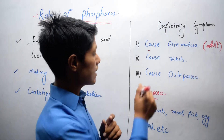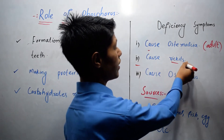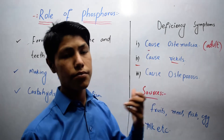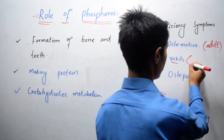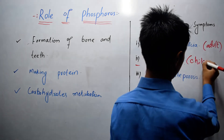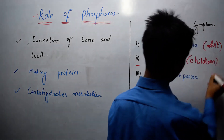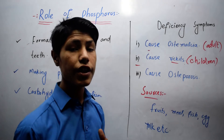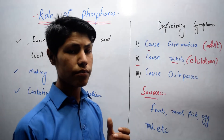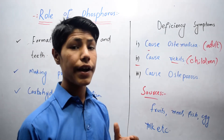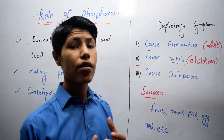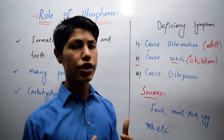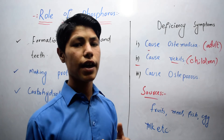The second one is it causes rickets. This disease mainly occurs in children, and it is a condition in which bones become weaker and bend under pressure, meaning that if pressure is applied, the bones can break.